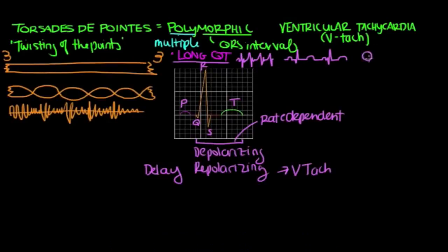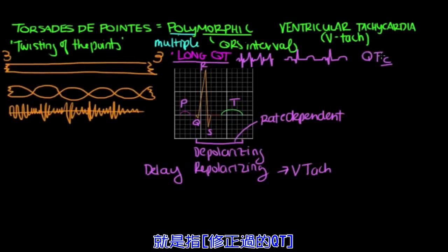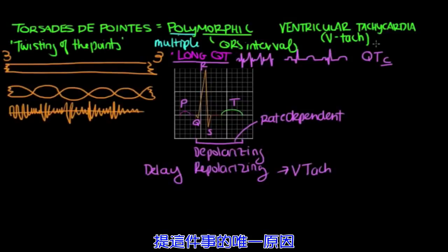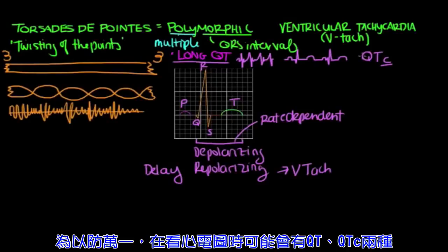You can calculate what's called the QTc, where the C stands for corrected, so this is just the corrected QT. And the QTc in certain situations is considered to be more accurate than the regular QT. And the only reason I bring this up is just in case you're looking at an EKG and you see that there's a QT and a QTc, and I want you to know what the difference is between the two.